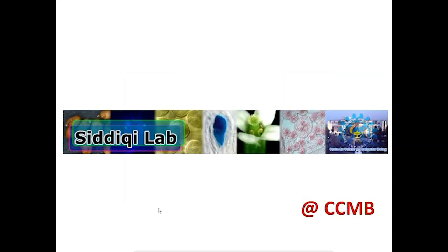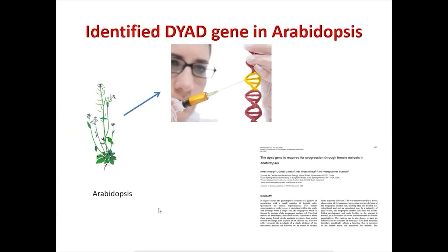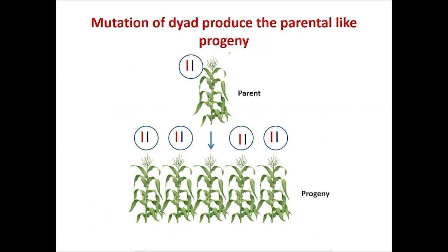Our lab work focuses on understanding meiosis using Arabidopsis thaliana, which is a model plant. We have identified a novel gene called dyad, and we have observed that disrupting the function of dyad or mutating this gene does not allow the separation of characters while producing offspring. This means that the offspring are exactly like their parents — whatever seeds we produce from the parent plant, they look exactly like the parent plant.